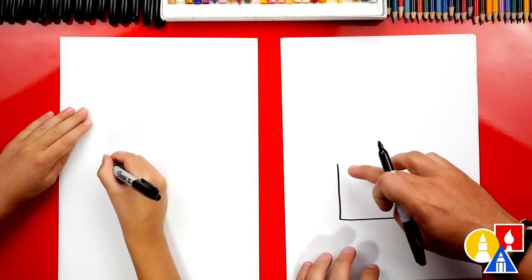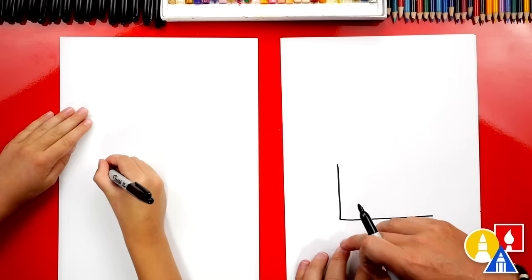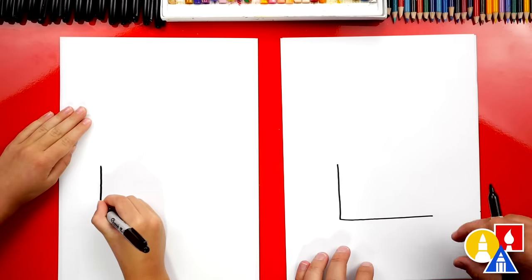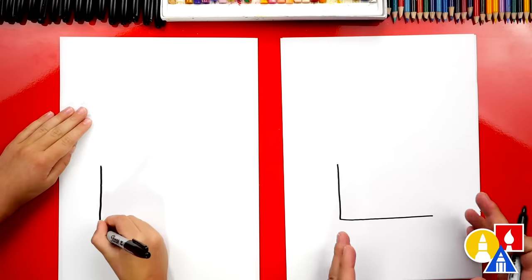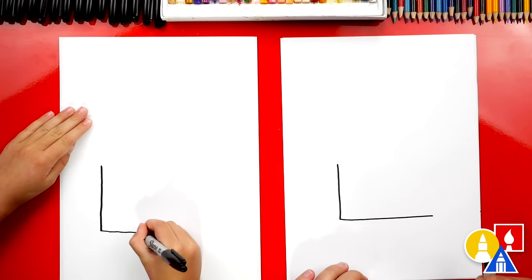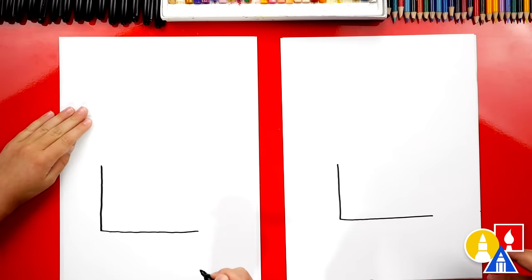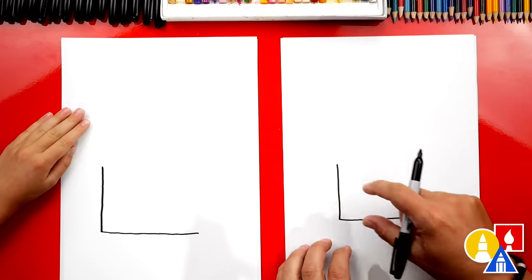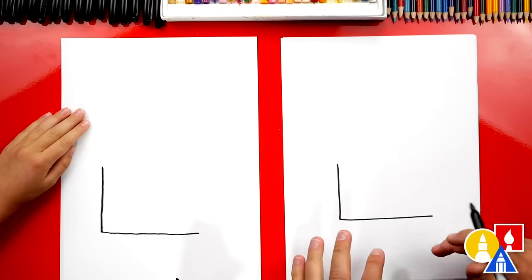So with the rectangle shape, one side is longer than the other side. Well, two sides are longer than the other two sides. And on a square shape, this line and the bottom line will be the same length.